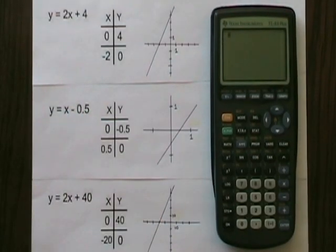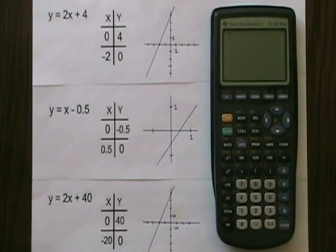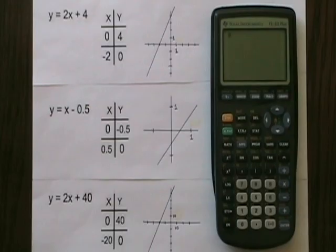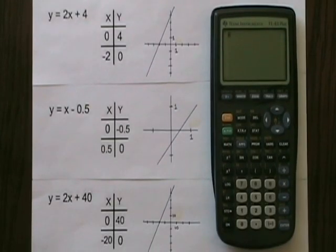Here on the left, I have three straight line equations. Each one has a small table of values showing only the x-intercept and y-intercept. I also have three small hand-drawn graphs.